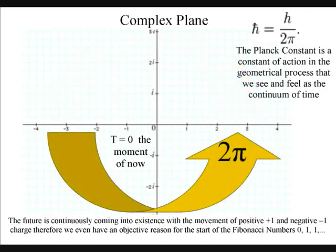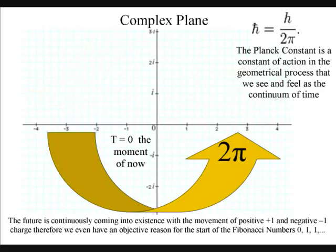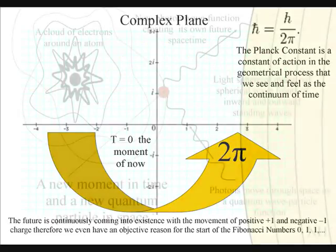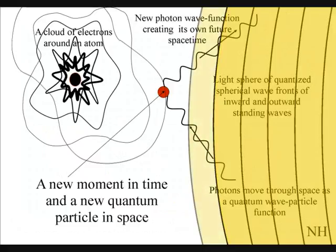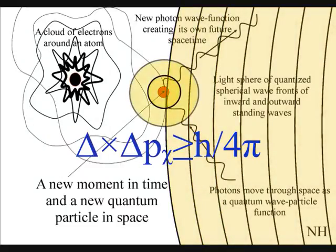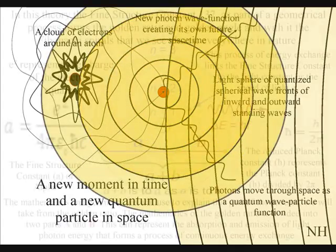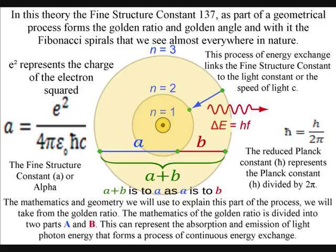This is quite a lot of geometrical information to draw a picture of what is actually happening. The dynamic part of this process is divided into two parts, in the form of the absorption and emission of light. The mathematics and geometry we will use to explain this part of the process, we will take from the golden ratio.